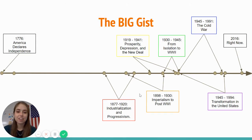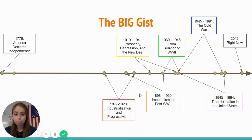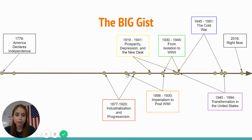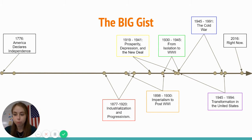Today we are starting a new unit, and we are going to be looking at imperialism and the U.S. post-World War I. So if we're thinking about the big timeline of American history, we are right here. Industrialization, our last unit, was focused here. You can see there is a little bit of overlap in terms of the time period, but the focus of the topics we talk about will be different.